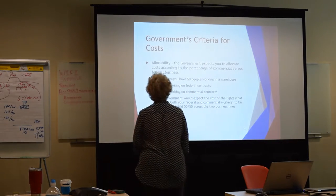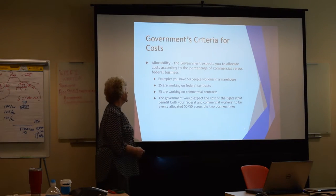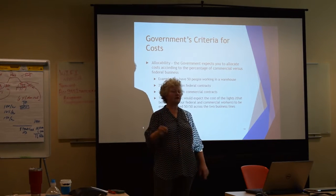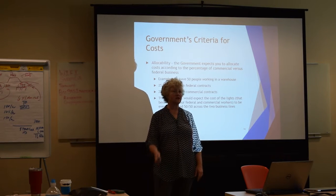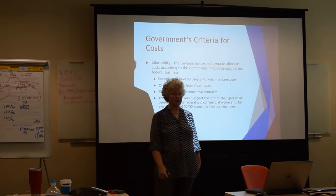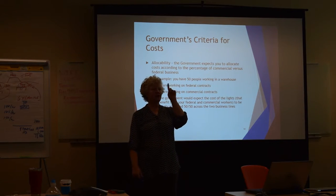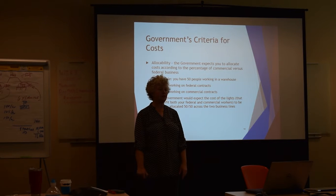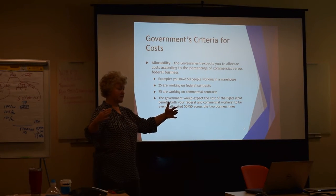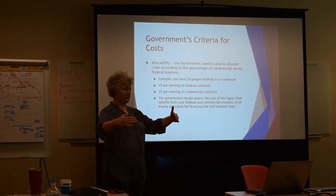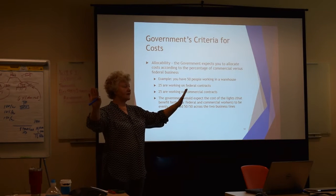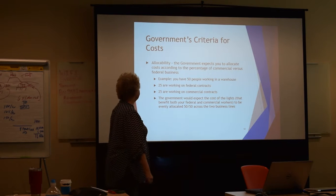And then finally, allocability. The government expects you to allocate your costs according to the percent of government versus commercial business. Divide the room in half — half of you are working on government business, half on commercial business. The cost of these lights: you have a commercial overhead pool and a government overhead pool. How should the cost of these lights be allocated? Split fifty-fifty. So basically you take your total business base and proportion out how much is government and how much is commercial — that's how you should be allocating your overhead costs. That's allocable.